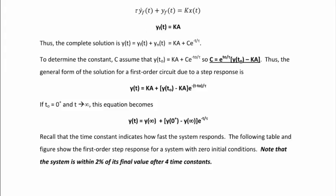To determine the constant C, use initial or final conditions. Y(t_0) = K·A + Ce^(-t_0/tau), so C = e^(t_0/tau) · [Y(t_0) - K·A]. The general form for the step response is Y(t) = K·A + [Y(t_0) - K·A]·e^(-(t-t_0)/tau). If t_0 = 0 and we analyze as t approaches infinity, this simplifies to Y(t) = Y(∞) + [Y(0) - Y(∞)]·e^(-t/tau).